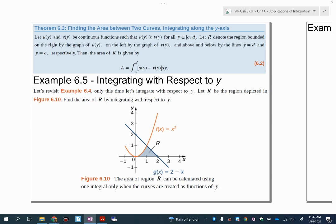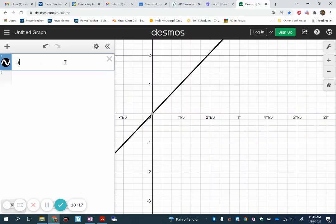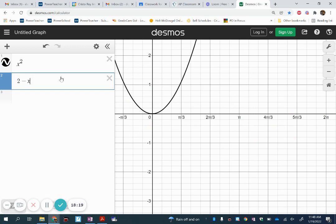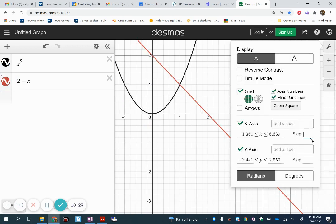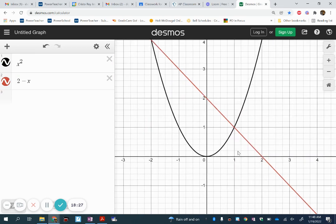So I'm going to graph x squared, and then I'm going to graph 2 minus x. So I'm going to graph x squared and then 2 minus x. Let me change back out of radians. Now, so what we just did was we found this area right here, okay?